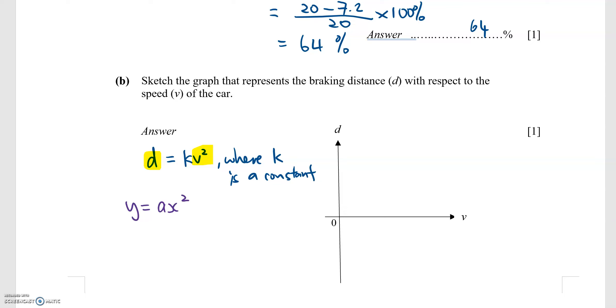In this case, I will have my curve pass through the point of origin because when v equals 0, d will also equal 0. And then it will be like this, d equals kv squared.